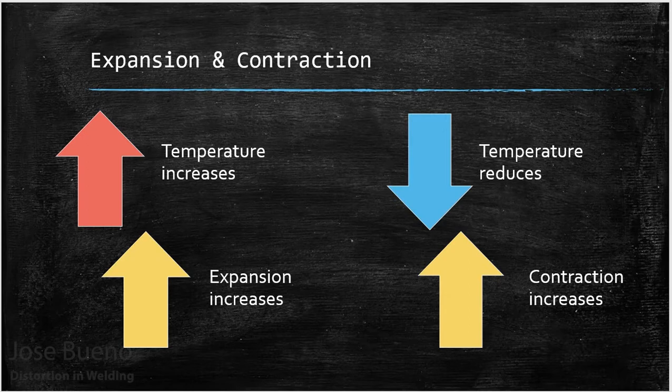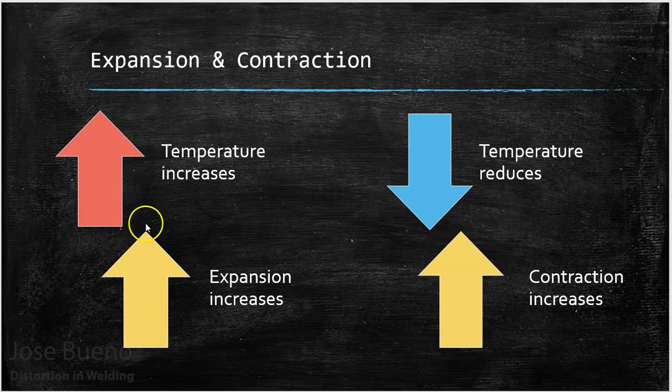When we talk about expansion and contraction, we need to remember that as metal heats up, it's going to expand — basically grow in size. As the temperature of the part reduces, contraction is going to increase, so it's going to try to return to its original size and shrink a little. To recap: as temperature increases, the part expands more; as it cools off, you'll see more contraction.